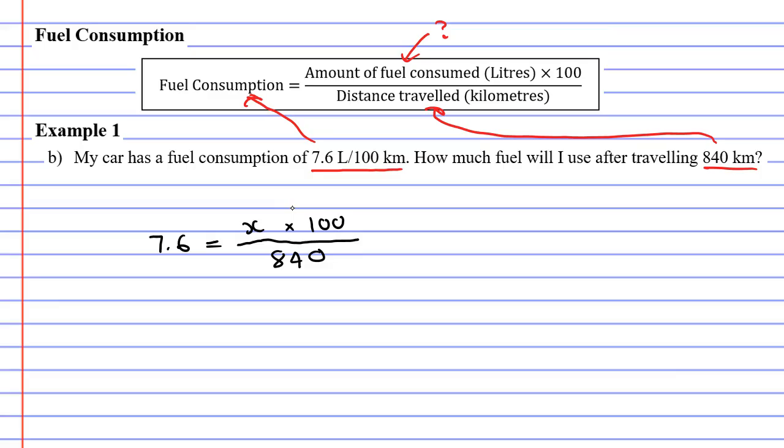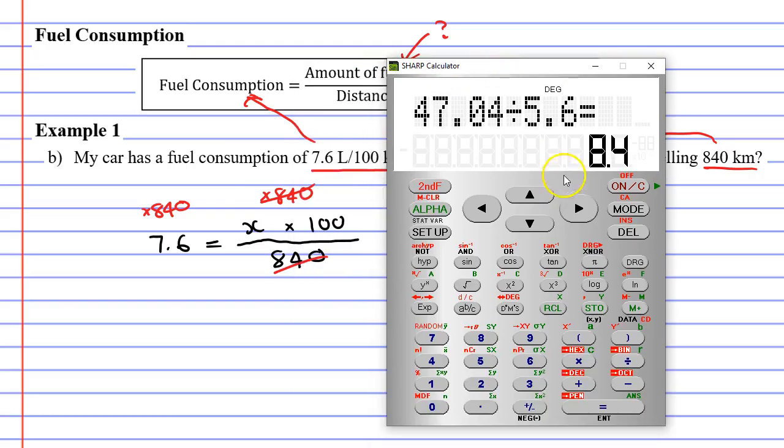So we're going to have to do some rearranging here. First, we'll multiply both sides by the same number. We'll multiply both sides by 840. This will cancel the 840 below. Bringing up my calculator, 7.6 times 840 equals 6384.